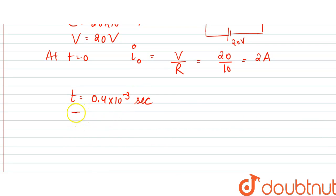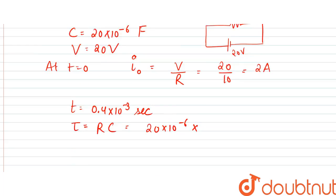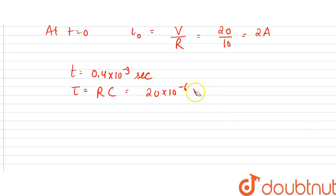So what we can write is since tau would be equal to R into C, which is equal to 20 into 10 to the power minus 6 into 10. Actually, we should write 10 before, because that is R. So that would be equal to 0.2 into 10 to the power minus 3 seconds.